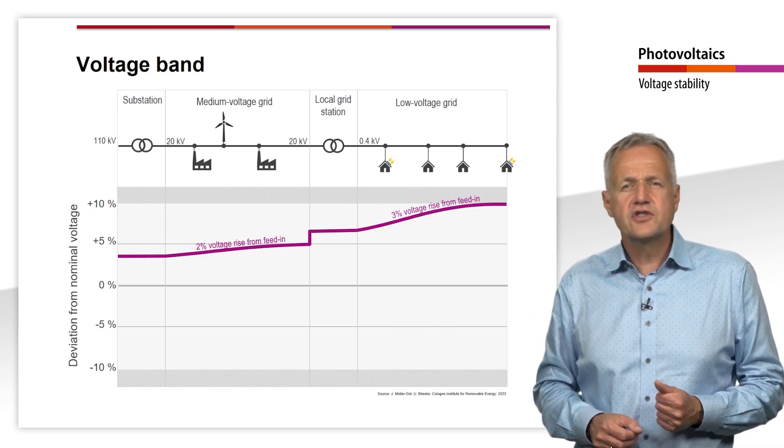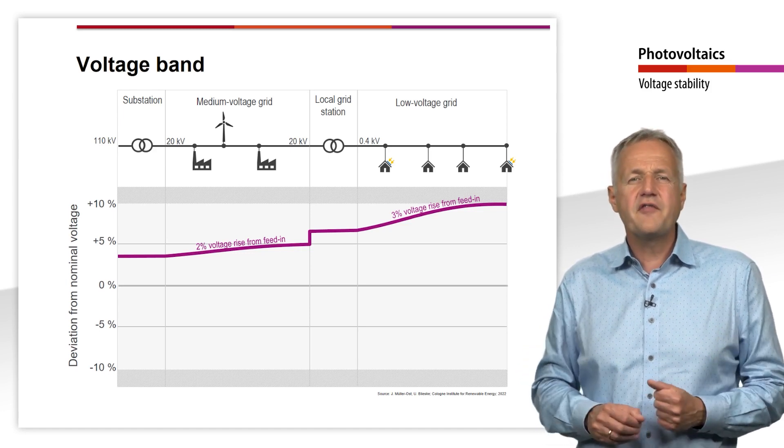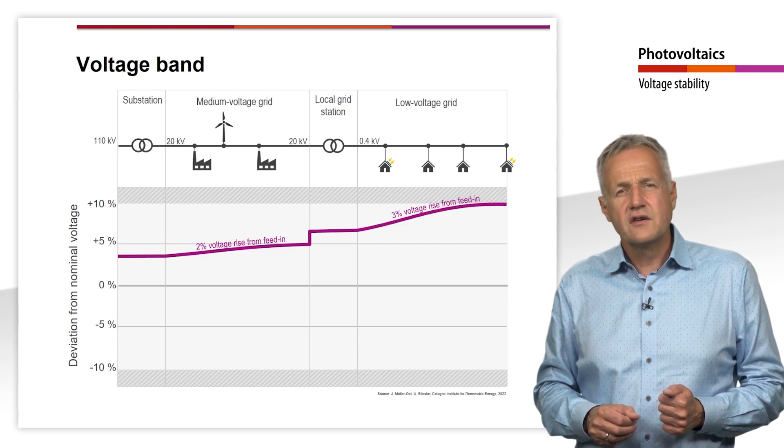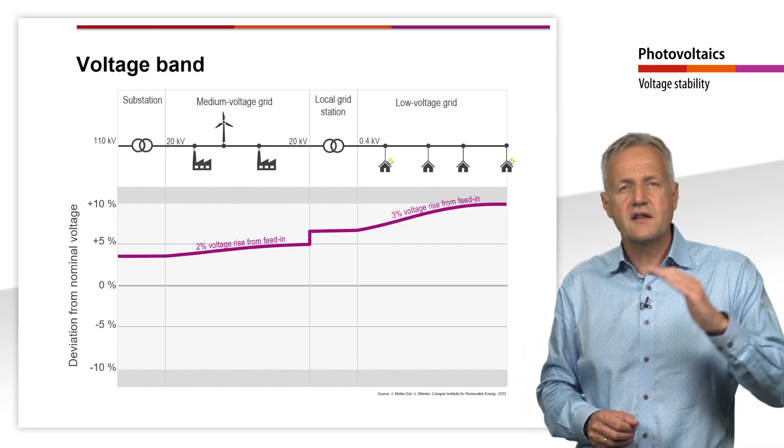The remaining distribution of the voltage band varies among the different grid operators. Typically, 5% each is allocated for the voltage drop in the medium voltage and the low voltage grid.